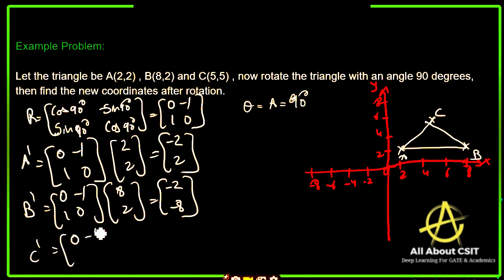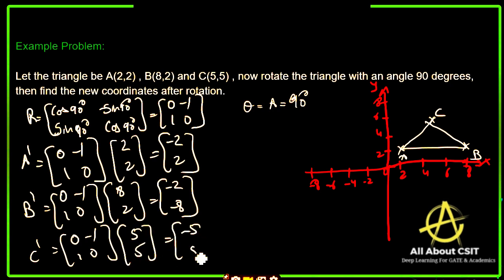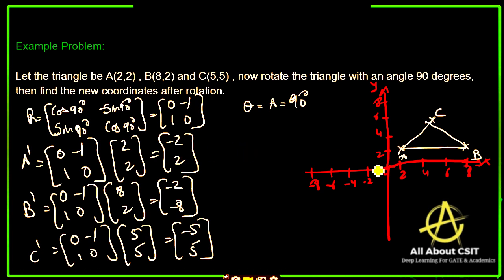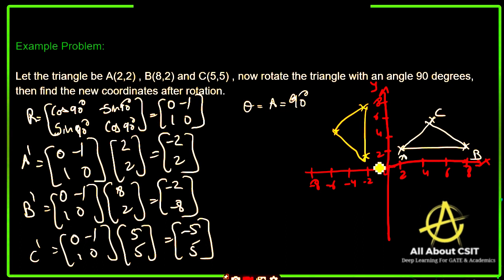For C', R × [5, 5] = [0×5 + (−1)×5; 1×5 + 0×5] = [−5, 5]. Plotting the new coordinates: A' at (−2, 2), B' at (−2, 8), and C' at (−5, 5). This triangle is rotated 90 degrees. This is how you need to apply the rotation technique on a 2D plane.